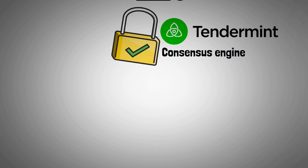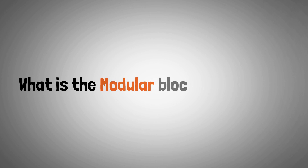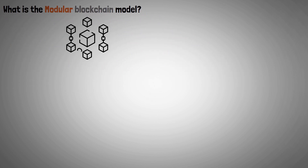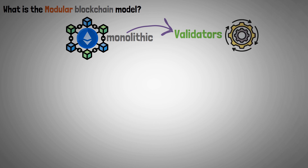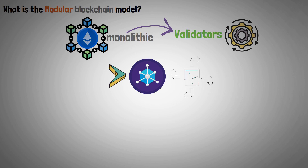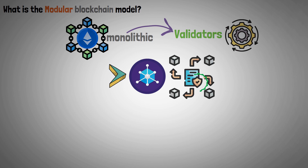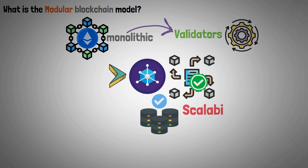Now let's explain what is the modular blockchain model. The majority of today's blockchains, like Ethereum, are monolithic in design, meaning that the same group of validators deploys all of the core operations simultaneously. As a result of each node having to confirm each transaction and contain all the data, scalability is constrained.